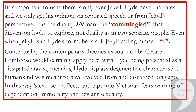It is the duality in man, the co-mingled, that Stevenson looks to explore — not duality as in two separate people. Even when Jekyll is in Hyde's form, he is still Jekyll, calling himself 'I'. Contextually, the contemporary theories expounded by Cesare Lombroso would certainly apply here, with Hyde being presented as a dissipated atavist, meaning Hyde displays degenerative characteristics humankind was meant to have evolved from and discarded long ago. In this way, Stevenson reflects and taps into Victorian fears, warning of degeneration, immorality and deviant sexuality.